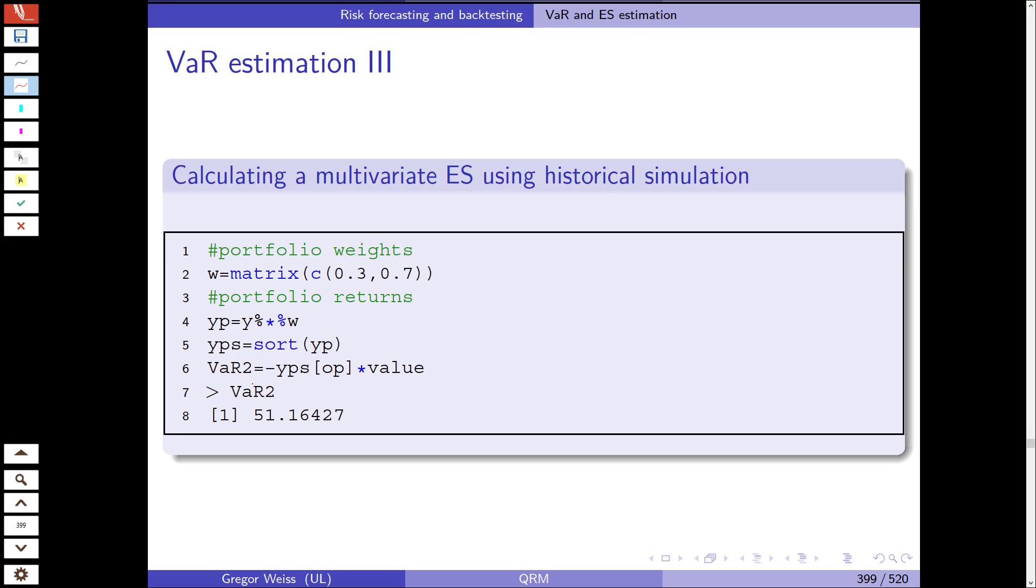We then calculate the VAR using historical simulation in the multivariate case. We assume portfolio weights 30 and 70% in line two, we then calculate the portfolio returns. And then in line 5678, we do the same. We simply look for the portfolio returns, we sort them, and then we take the observation at that index of the 1% quantile times 1000. And for the portfolio, we get a VAR of $51.16.